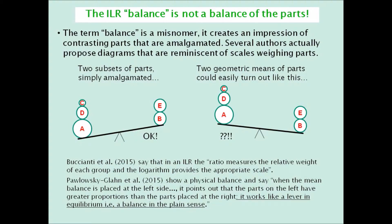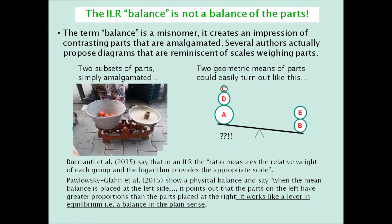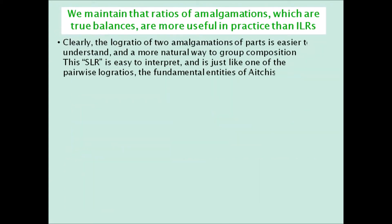About ten days ago, I was at a traditional Turkish market, and when I bought some tomatoes, I saw a real balance. Clearly, the log ratio of two amalgamations, or SLR, is easier to understand and interpret, and a more natural way to group subsets of compositional parts. An SLR is just like any simple pairwise log ratio, which is the fundamental concept in Aitchison's approach.